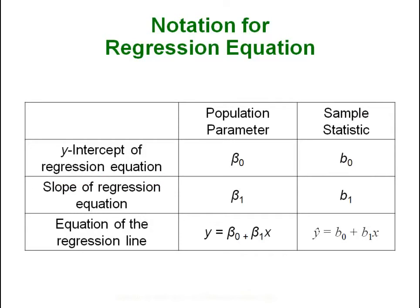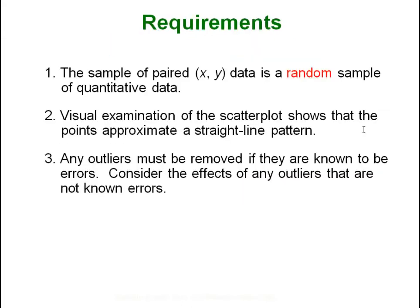Some new notation: we are used to b-sub-zero and b-sub-one when talking about samples, but now we will also have betas — those Greek letters — which are used when talking about the population. Requirements, just like before since we are still doing correlation: we have to have a random sample, run a visual examination of our scatter plot to make sure the points follow a straight line pattern, and always check for outliers and remove those.